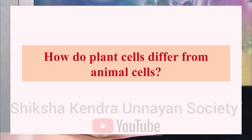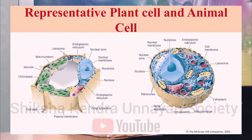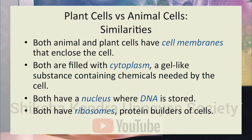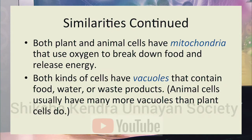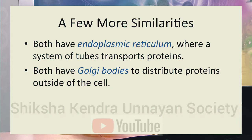There are a number of similarities between plant and animal cells. Both have a cell membrane that encloses the cell, and both are filled with cytoplasm — a gel-like substance containing chemicals needed by the cell. Both have a nucleus where DNA is stored, ribosomes for protein synthesis, and mitochondria that use oxygen to break down food and release energy. Both also have vacuoles, endoplasmic reticulum for transporting proteins, and Golgi bodies to distribute proteins outside the cell.